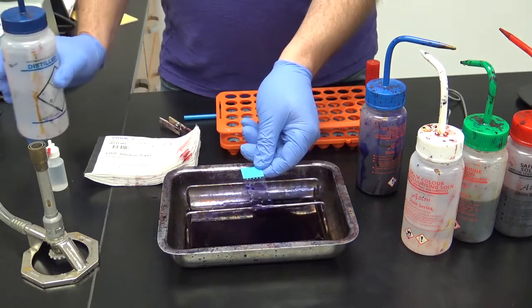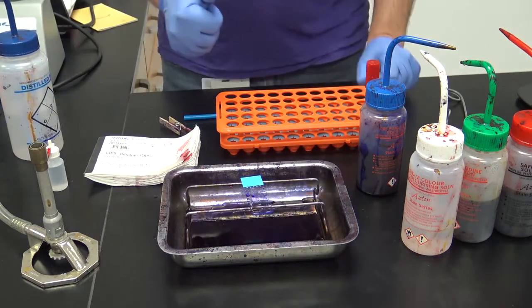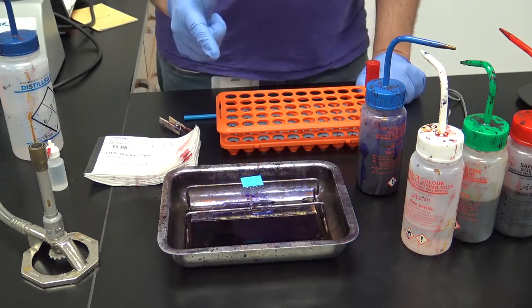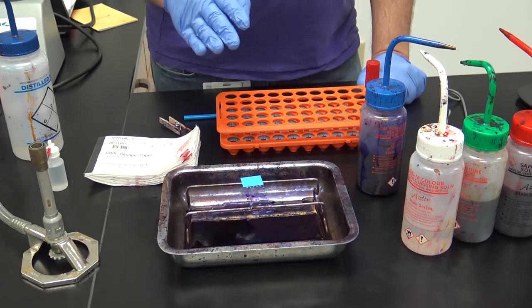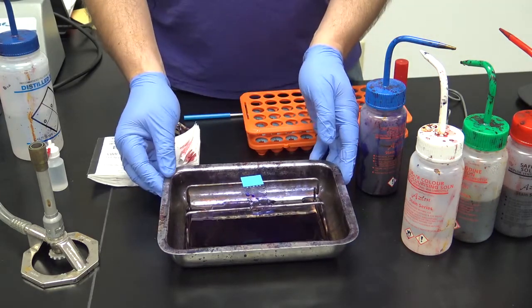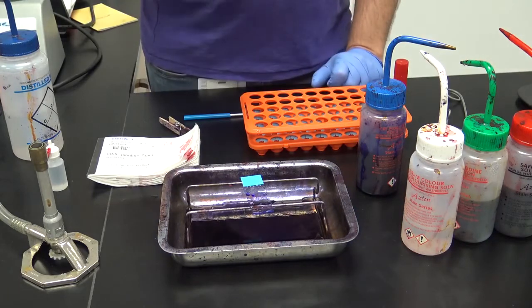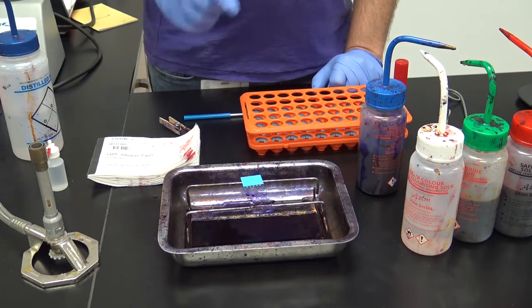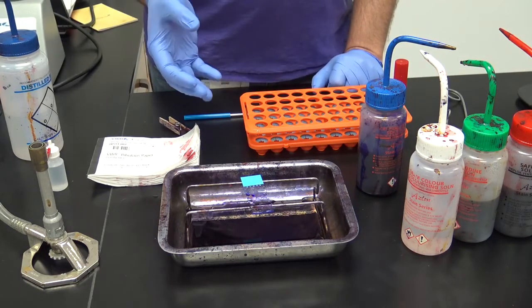For this procedure, you will be using a primary stain, a mordant, a decolorizer, and a counter stain. Stain bins should not be allowed to fill entirely, and should be emptied into the waste accumulation center at the back of the room using the funnel provided.